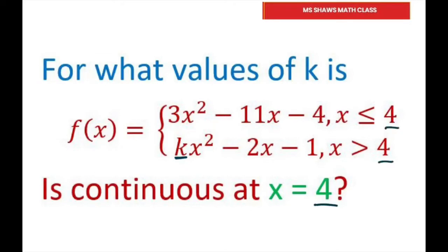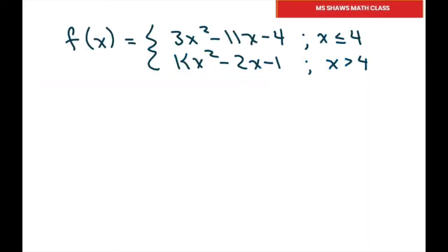Here we have our 4s. The first condition we need to determine is if we have an f of 4. So if you plug in 4, we use the upper portion. It's going to be 3 times 4 squared minus 11 times 4 minus 4.